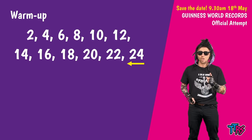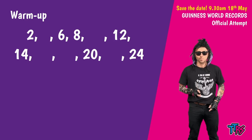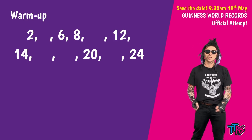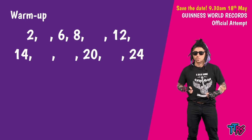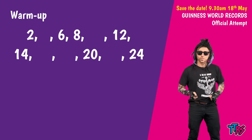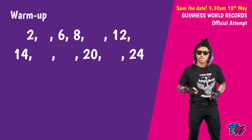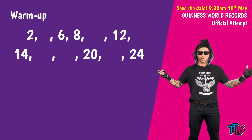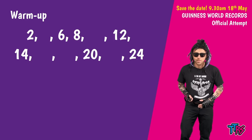I'm now going to hide some of them — you've still got to say the missing numbers. So let's go together after 3 — 2, 6, 8, 12, 14, 20, 24. We've done it — brilliant! That's the end of the warm-up.